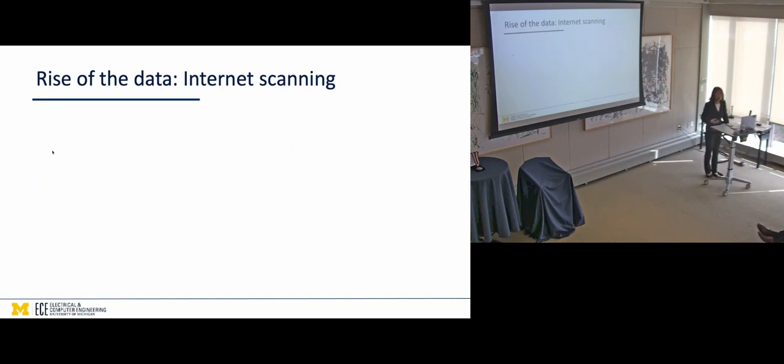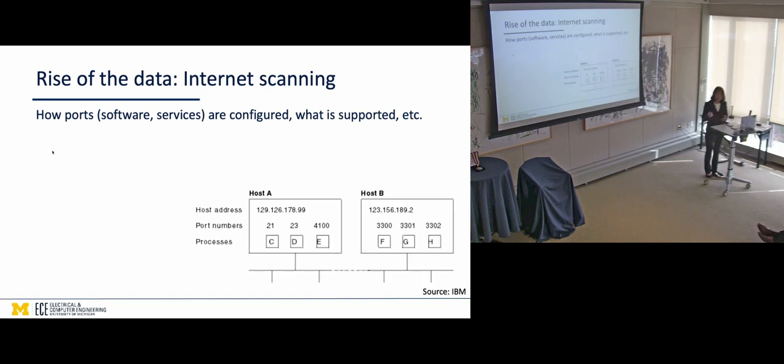So researchers start to collect any variety of data, and one prominent category is internet scanning. And what this does is essentially you have this piece of software that allows you to send out data packets to ping any host on the public internet, any IP address on the internet. And depending on how that packet is received and responded to, you can infer a lot of information about what software services are configured on a particular port, how they're configured, and so on. As some of you may know, each IP address, each device you carry can have up to thousands of ports, supporting many, many different services. So this type of data collection gives us a very detailed view of what's out there, how things are configured.